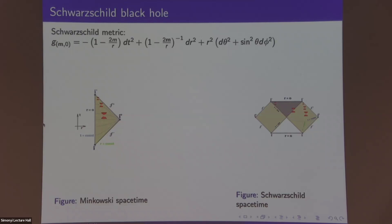Looking at the Schwarzschild metric, it seems we have singularities where r equals zero and where r equals 2m. Here r equals zero is a real singularity because we have a curvature blow-up there. But the singularity at r equals 2m is just a coordinate singularity. We can extend the manifold beyond r equals 2m to get the whole picture. The gray region is the black hole region and the exterior region are separated by r equals 2m, which is called the event horizon.